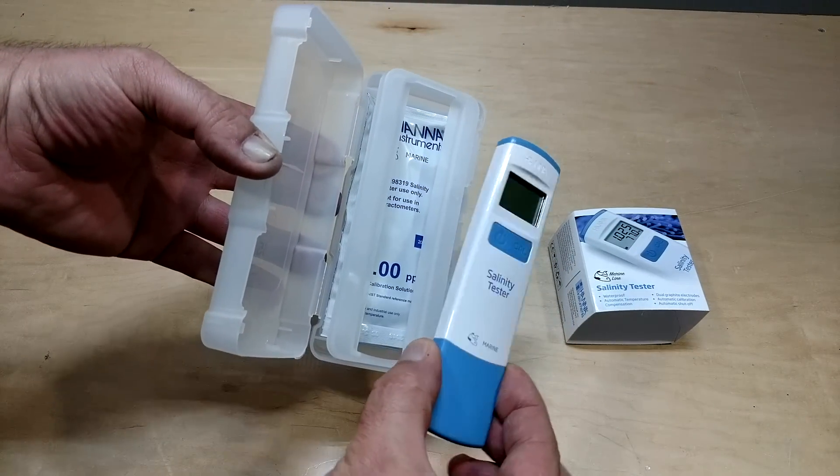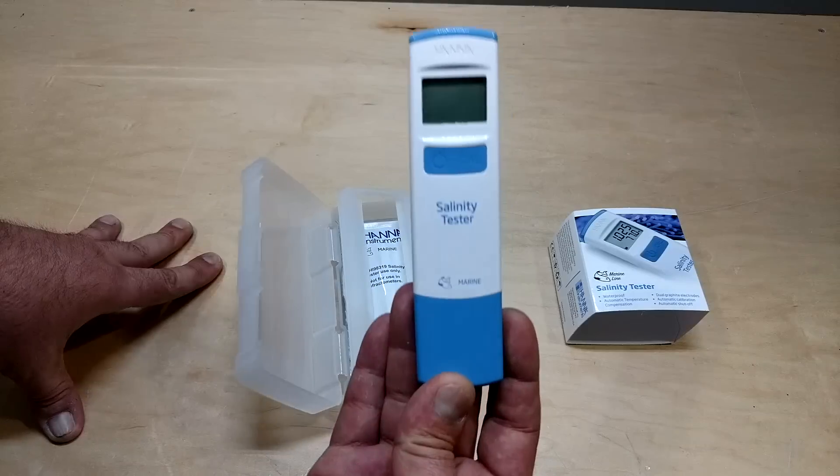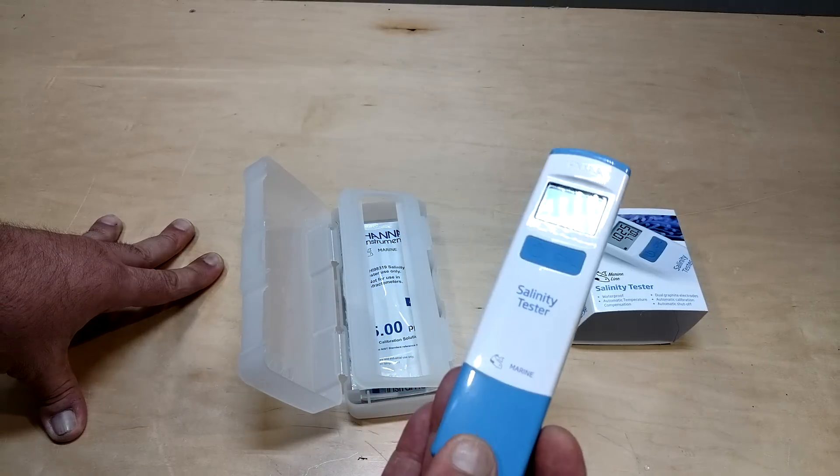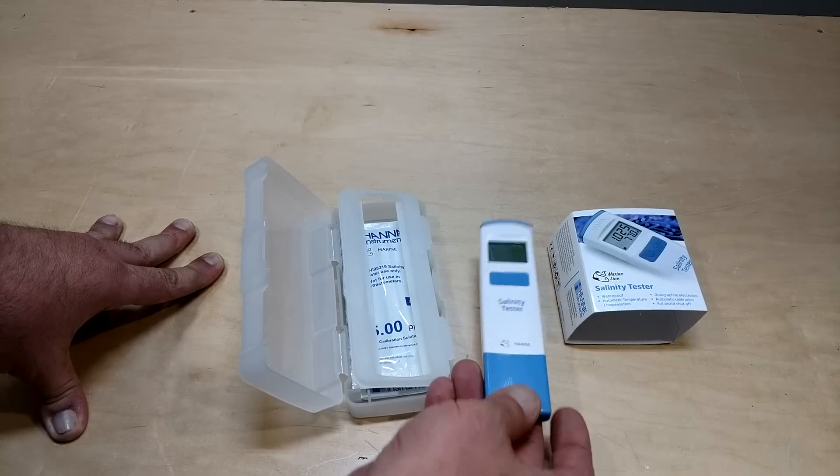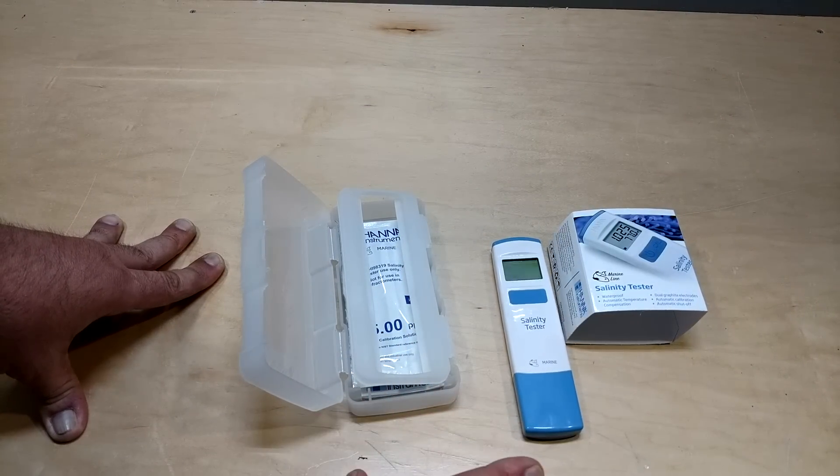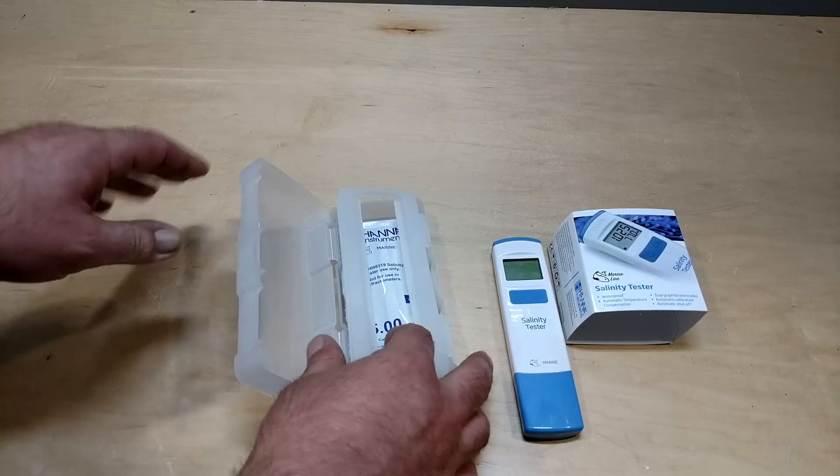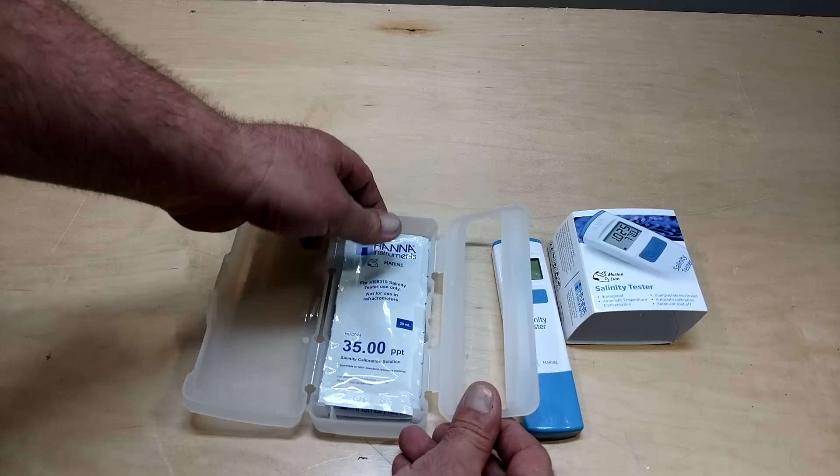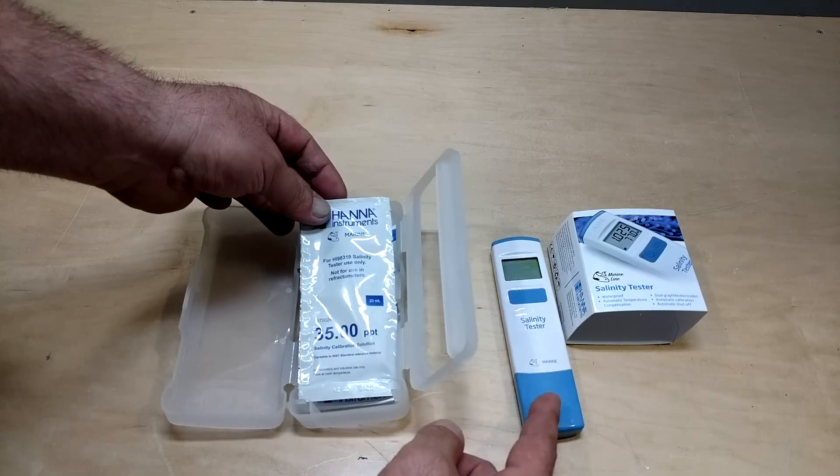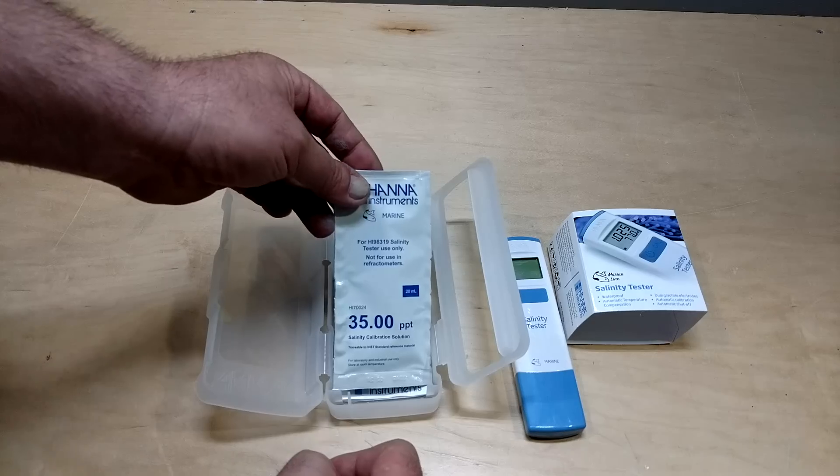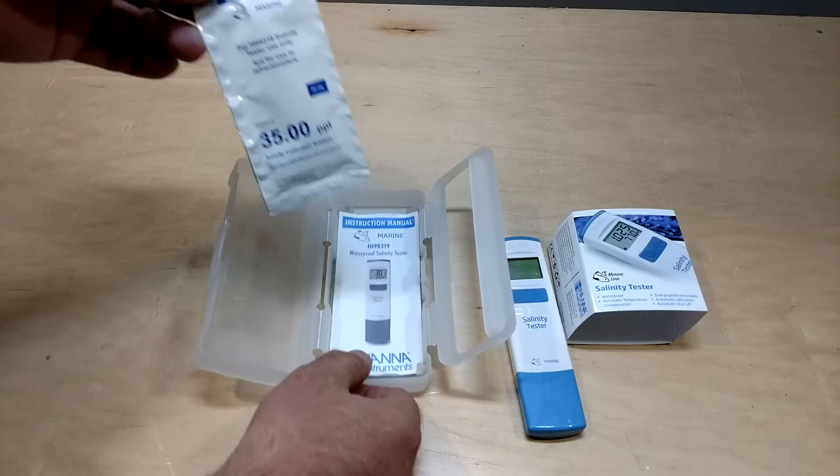So I've been using a refractometer for four years now and I'm officially only using the Hanna Salinity Tester. I still have my refractometer, but it is put to the side and I'm not using it anymore. It's an emergency backup in case I lose this, I step on it, I break it, I throw it into a volcano. You never know what could happen.